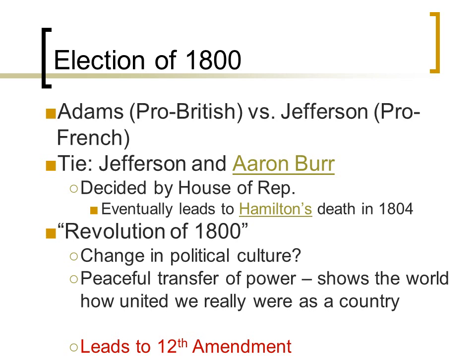Jefferson's victory was called the Revolution of 1800 because it marked the first time a new political party took control of the nation. The whole world held its breath to see what would happen. There was no bloodshed, no major upset — the transfer of power was completely peaceful. It showed the world that America was truly united. After this, the 12th Amendment was created, requiring candidates to run specifically for president or vice president, preventing two men of different parties from ending up on the same ticket.